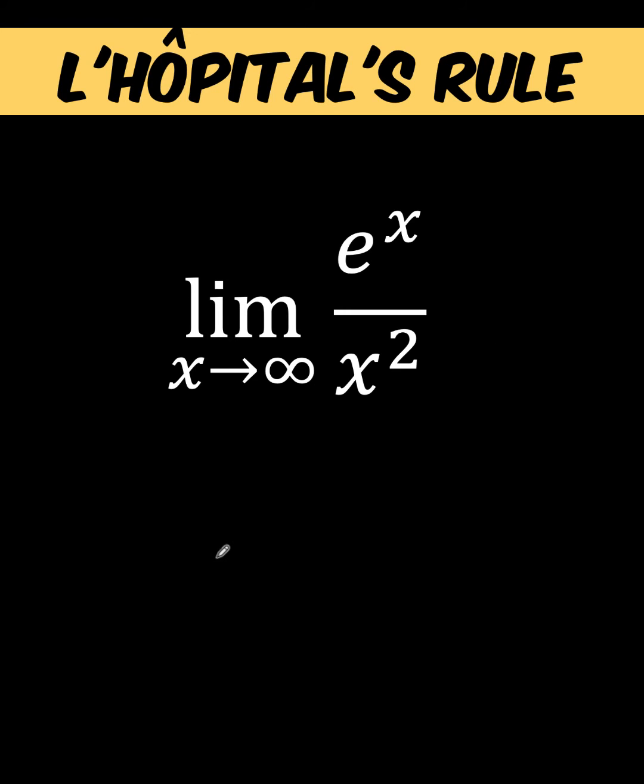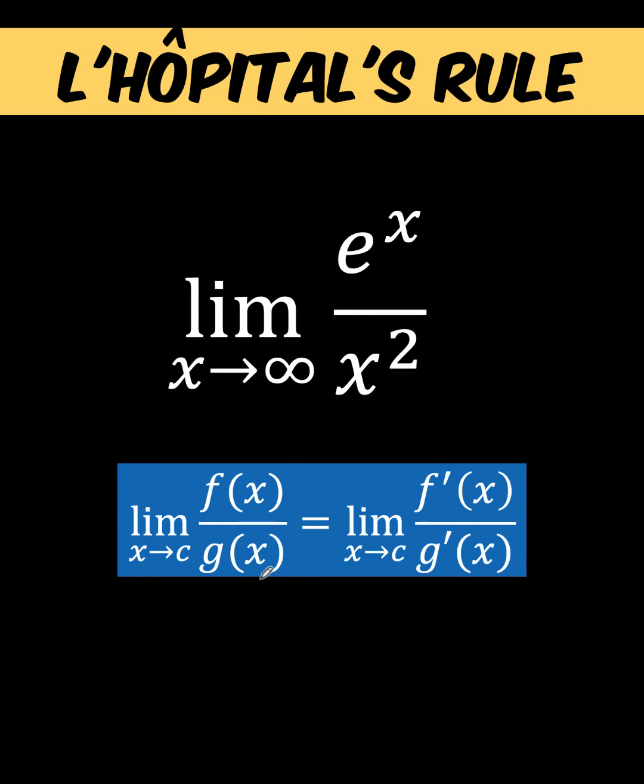The rule says that if you want to find the limit of f of x over g of x as x approaches certain constant c, that is just the same as the limit when you take the derivative of f divided by the derivative of g as x approaches certain constant c, subject to some conditions. And that is the condition that you will encounter in this problem.